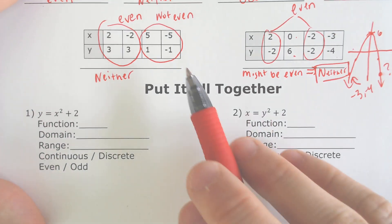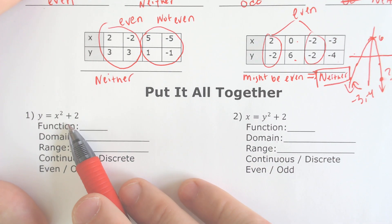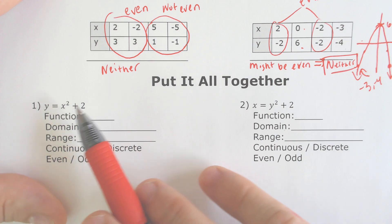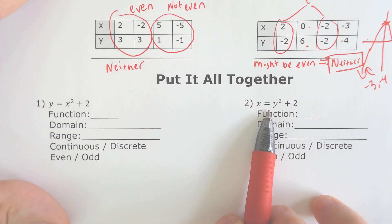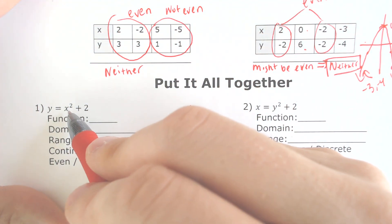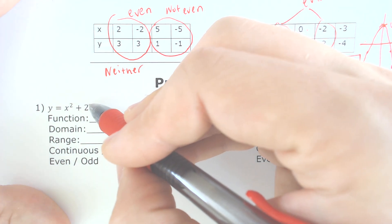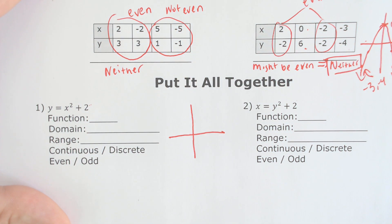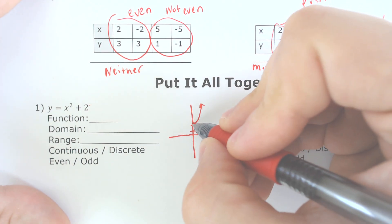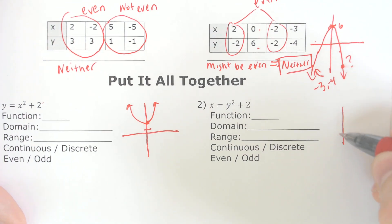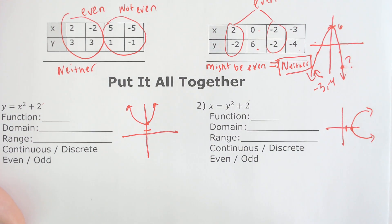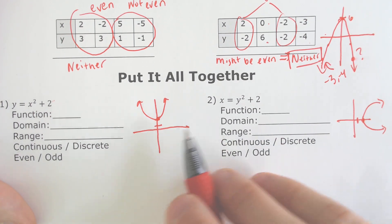Putting it all together — if you have an equation and need to figure out domain, range, continuous, discrete, even, odd, etc. Here we have an x squared, and here we have a y squared; other than that, it's the exact same equation. An x squared equation will produce a parabola. If it is shifted up by 2 — using the change the sign, keep the sign rule for function shifting — it would look like this. The only difference with the y squared version is that instead of shifting up, because it's x equals, it's going to be shifted to the right instead.